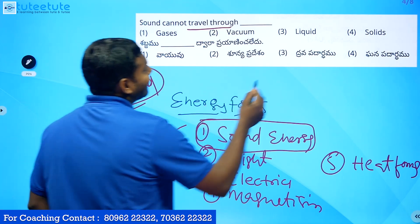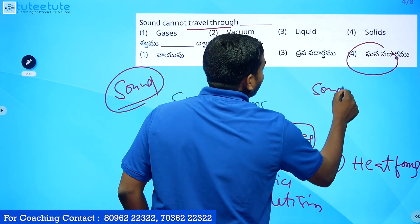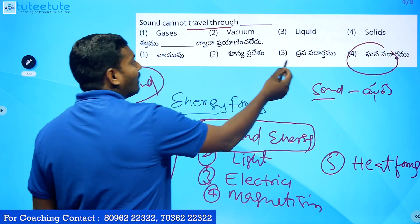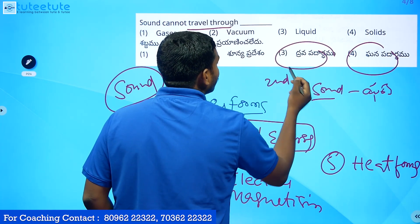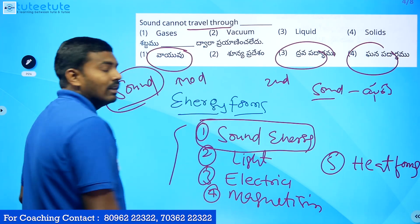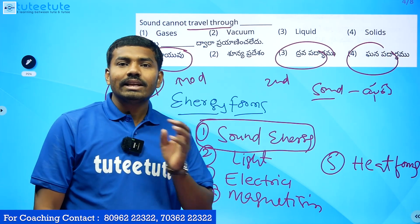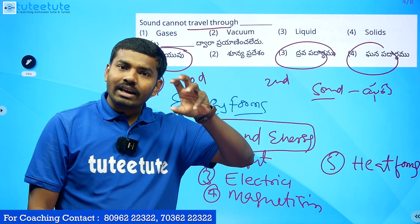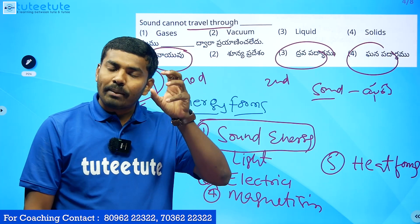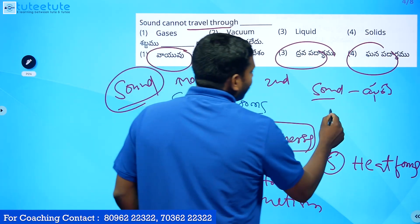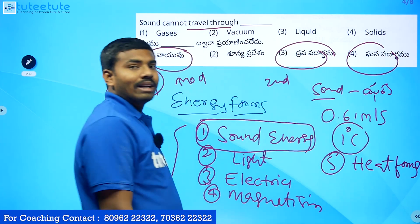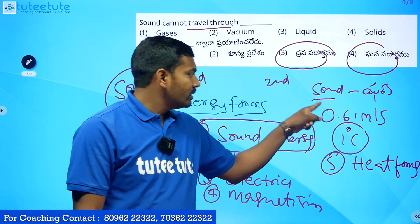Sound travels fastest in solids. The speed of sound in air is 330 meters per second. With an increase in temperature, every degree increase results in approximately 0.61 meters per second increase in the speed of sound.